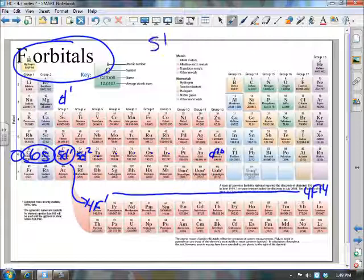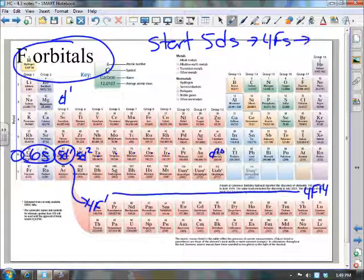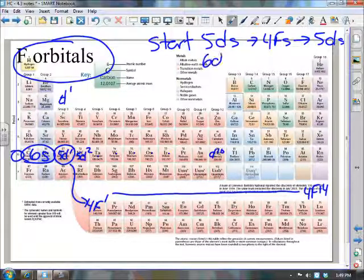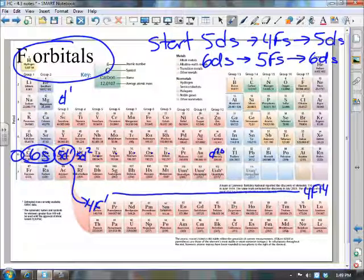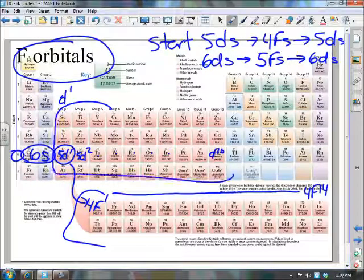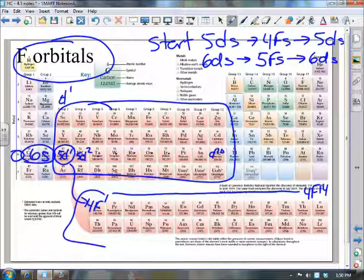What we do is we start the 5ds, then we go to the 4f's, and then we come back to the d's. So again, simple little phrase here. We start the 5ds, then we go to the 4f's, and then we come back and finish the 5ds. Same thing with the next row. We start with the 6ds, we go to the 5f's, and then we come back to the 6ds to finish our configuration. There's not more electrons. There's still only 14 there in the bottom two rows. There's still only 10 here in the d block. But it sort of throws out of whack a little bit our sequence and our order. Is that a big deal? No. How often are we going to be dealing with the elements down here in the bottom periodic table? Not very much, but it's definitely something we need to know and understand.